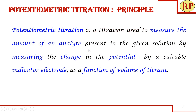Let us understand what potentiometric titration is. It is the titration used to measure the amount of an analyte present in a given solution by measuring the change in potential by a suitable indicator electrode as a function of volume of titrant. As the titration proceeds, there will be a change in the potential indicated by the indicator electrode as the concentration of the analyte solution changes.